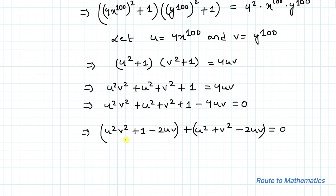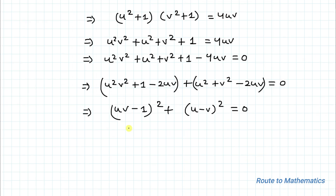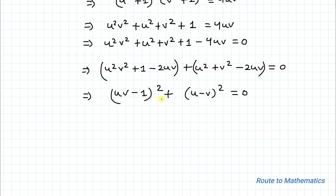We can now apply the algebraic identity (a − b)². Taking a = uv and b = 1, the first group becomes (uv − 1)². Similarly, applying (u − v)² to the remaining terms, we get (uv − 1)² + (u − v)² = 0.